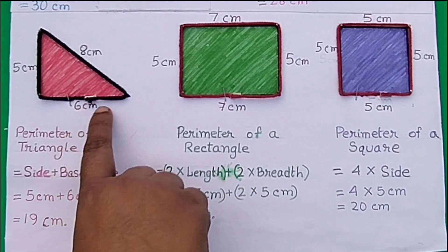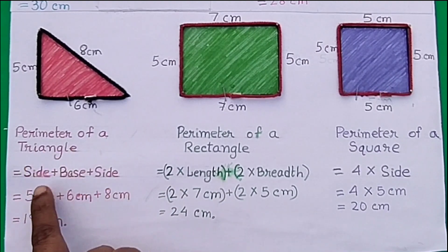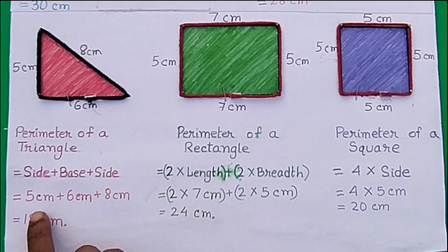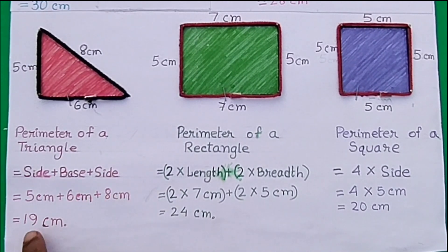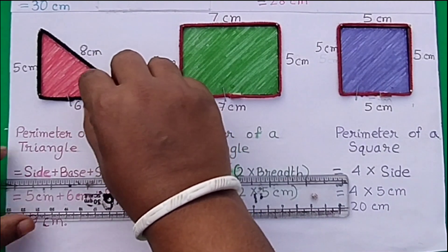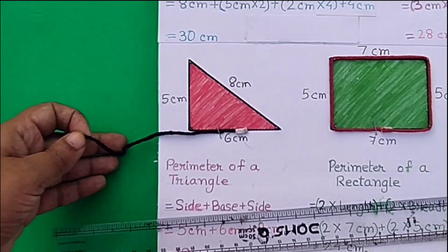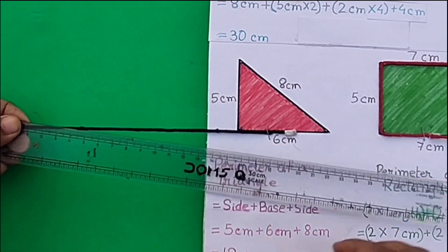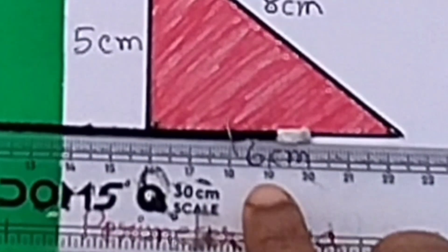A triangle has three sides. To find the perimeter of a triangle, we have to add all three sides. The length of the sides of this triangle is 5 centimeters, 6 centimeters, and 8 centimeters, so the perimeter is 19 centimeters. We will measure it with the help of this scale — as you can see, it is 19 centimeters.